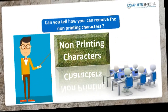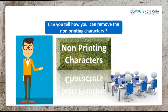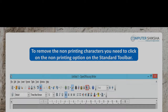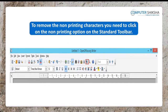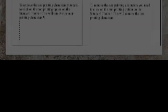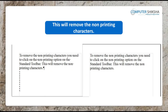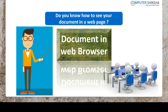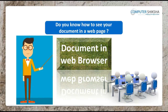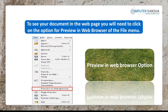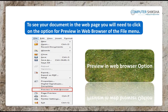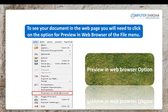Can you tell how you can remove the non-printing characters? To remove the non-printing characters, you need to click on the non-printing option in the standard toolbar. This will remove the non-printing characters. Do you know what you need to do to be able to see your document in a web page? To do so, you will need to click on the preview in web browser option of the file menu.